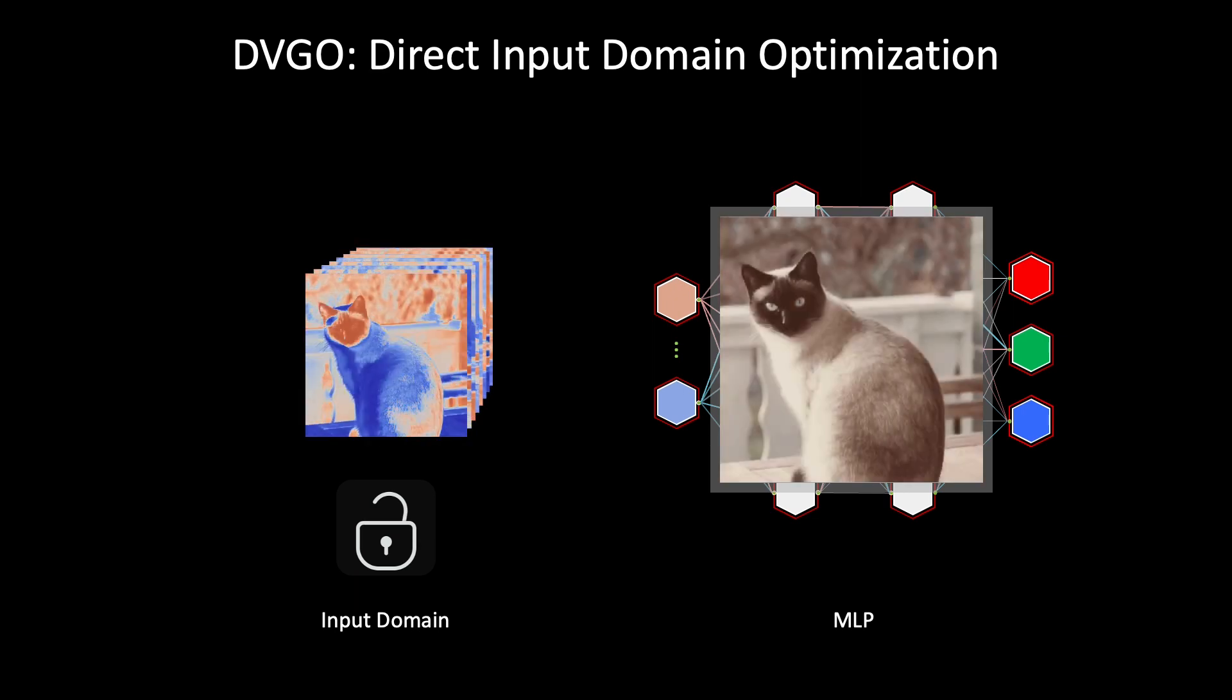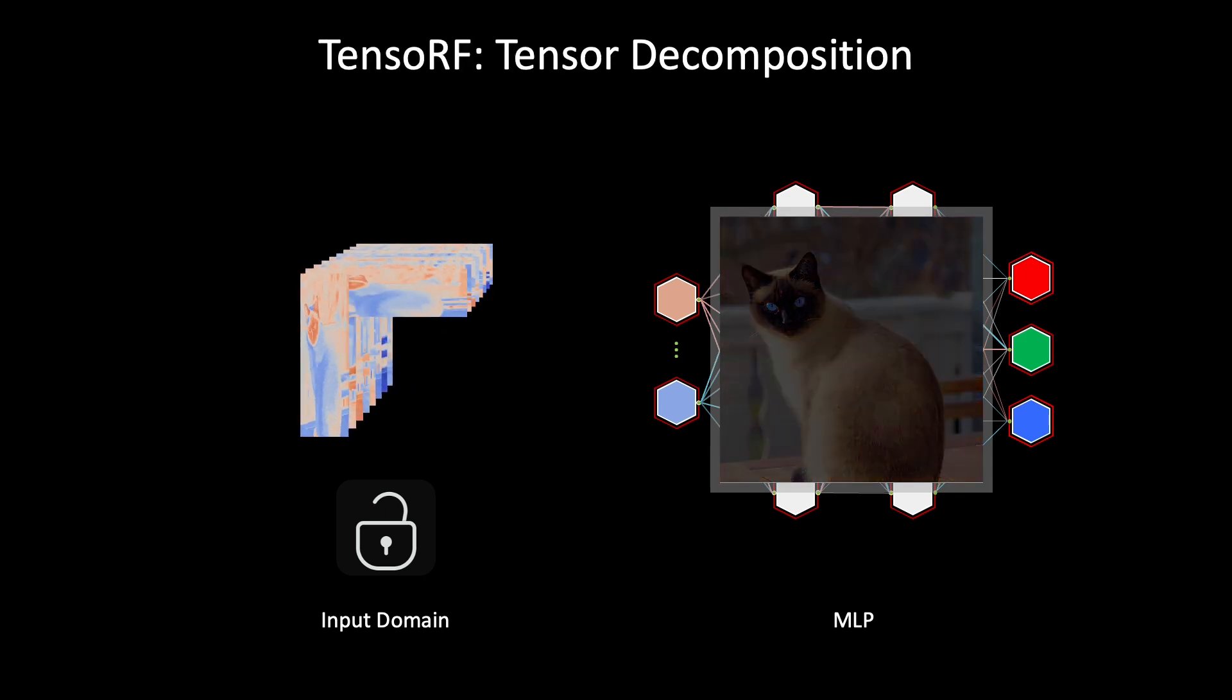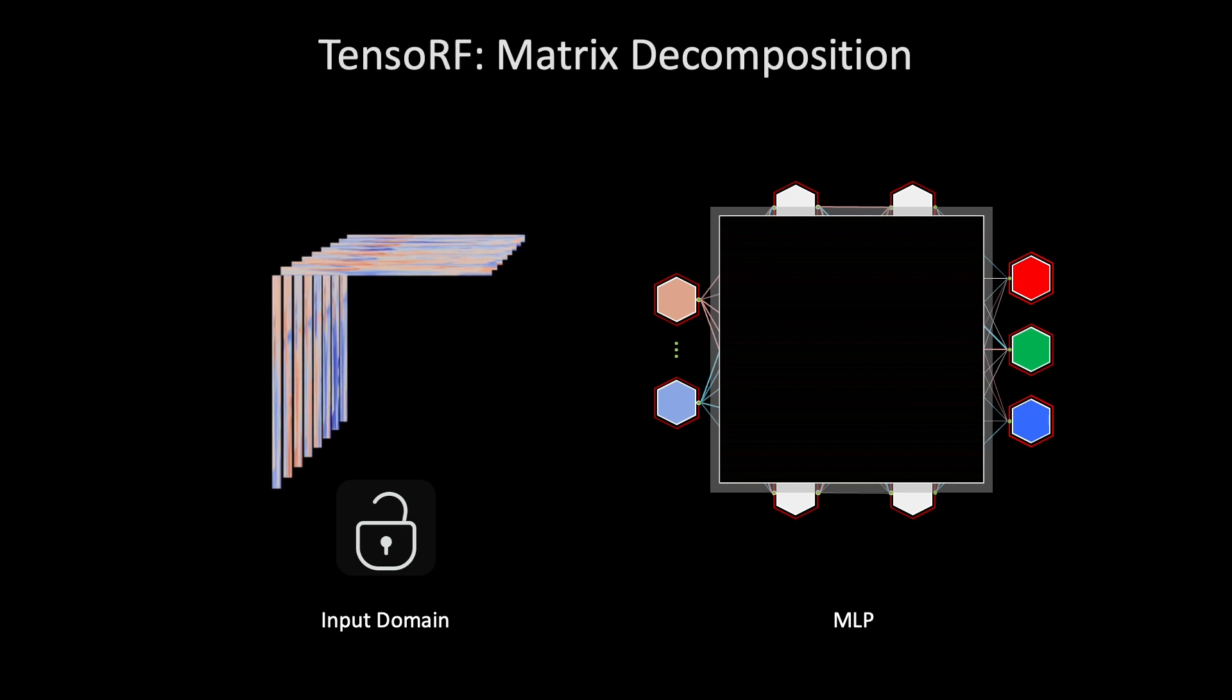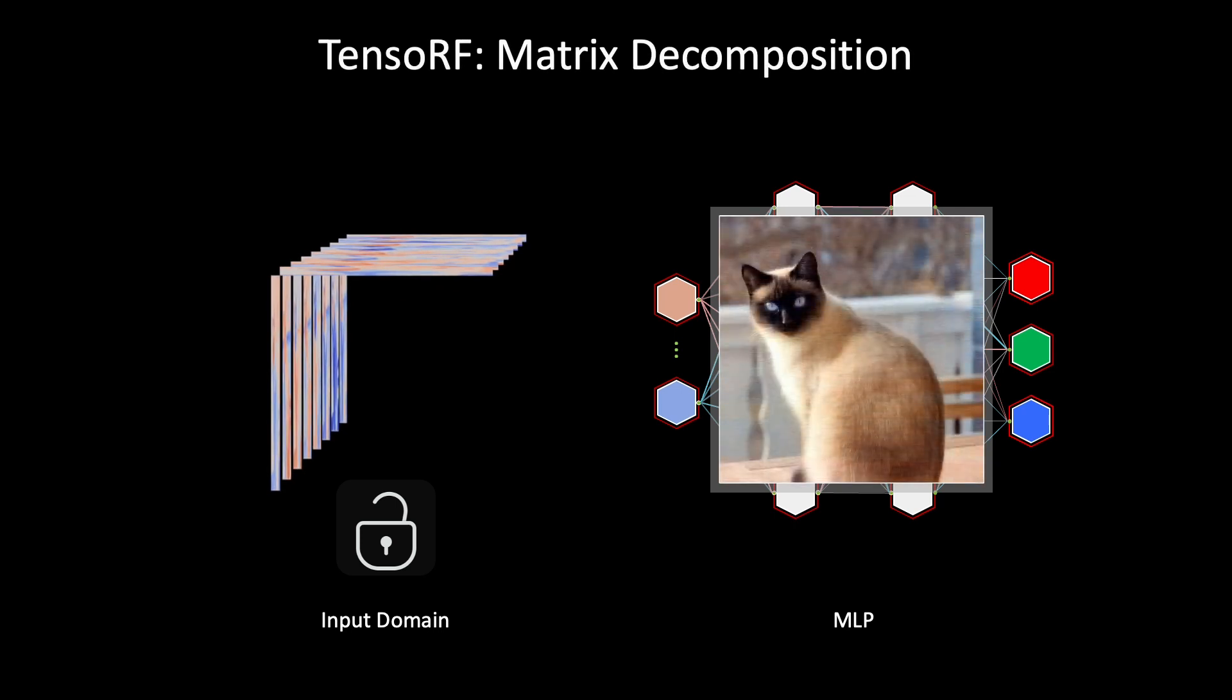Which enables direct optimization with a shallow MLP network or even no neural network. As a result, it enables fast training and significantly enhances the model's capability. Concurrent work Tensurf factorizes the radiance fields into the products of vectors and matrices or multiple vectors, achieving efficient feature queries at a low memory footprint.